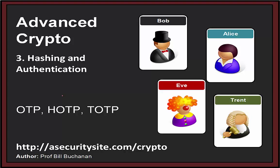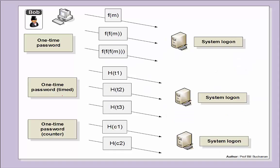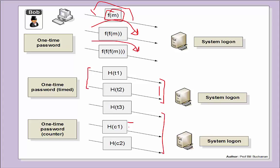Another method is one-time passwords. With a basic one-time password, we create a hash the first time, and the second time we take that hash and put it through the algorithm to produce a new one. Only by knowing the original seed can we determine the password at any given time. We can also have a timed password where the hash produced is only valid for a certain amount of time, or a counter-based version where every access to the system produces a different value.